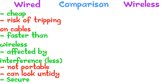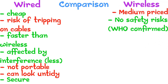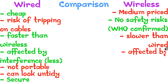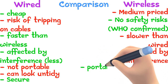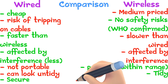Wireless connections have no need to buy cables, and the router is priced at a medium price. There are no safety risks, as the WHO has confirmed there is no problem with radiation. Wireless is slower than wired and is affected by interference. It is portable within a certain range, it is tidy, but it is easy to intercept.